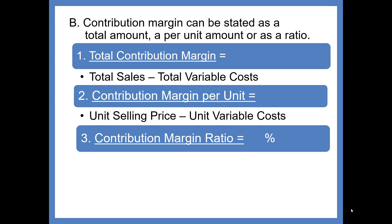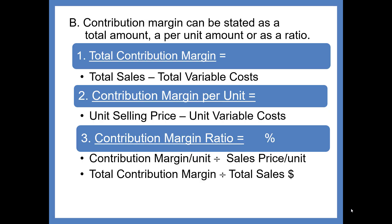The Contribution Margin Ratio is computed either on a per unit basis or a total dollar basis by taking Contribution Margin divided by Sales. So it could be Contribution Margin per unit divided by Sales price per unit, or Total Contribution Margin divided by Total Sales dollars.